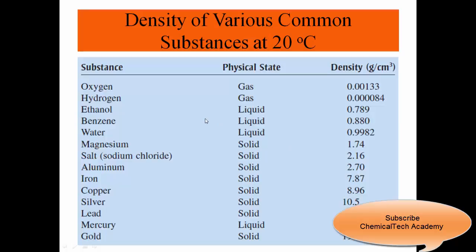Here we have the density of various common substances at 20 degrees Celsius. Oxygen, for example, is a gas, and you can see its density. On the other hand, gold is a solid with a density of 19.32. The density of water is very close to 1 gram per cubic centimeter.